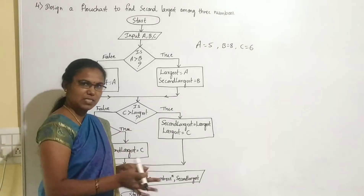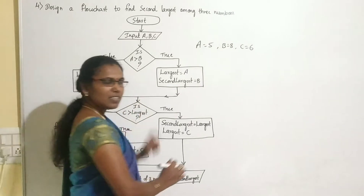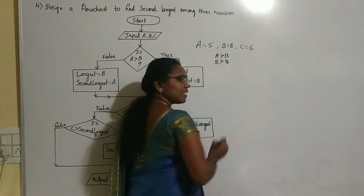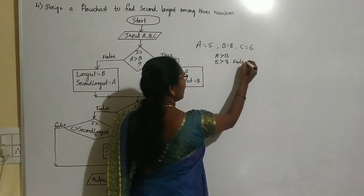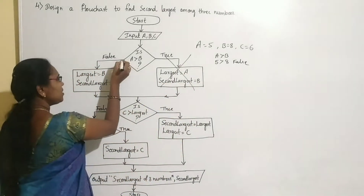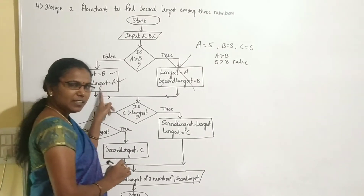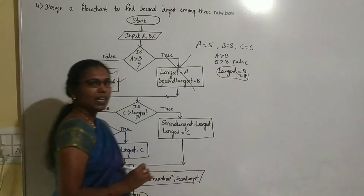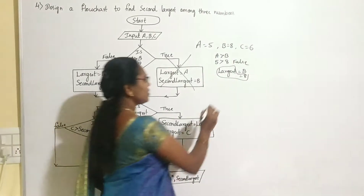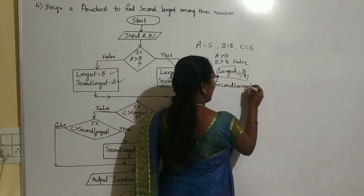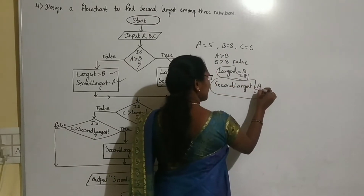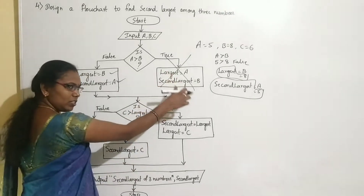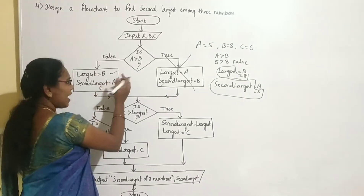We check the first condition: is A greater than B? A is 5, B is 8. Is 5 greater than 8? No — the condition is false. The data moves in the false direction and executes the two statements: largest = B, so B value 8 is assigned to largest; second largest = A, so 5 is assigned to second largest. Now largest is 8 and second largest is 5.